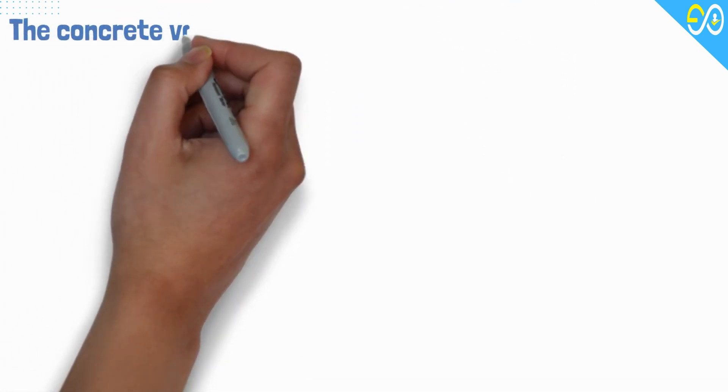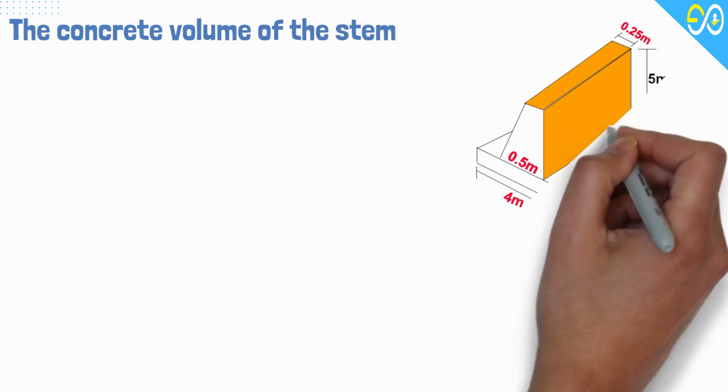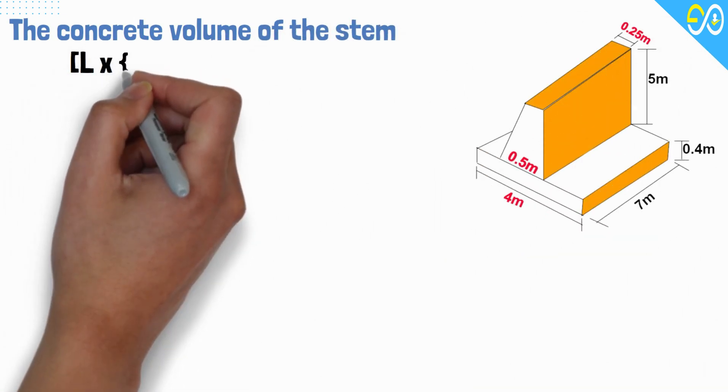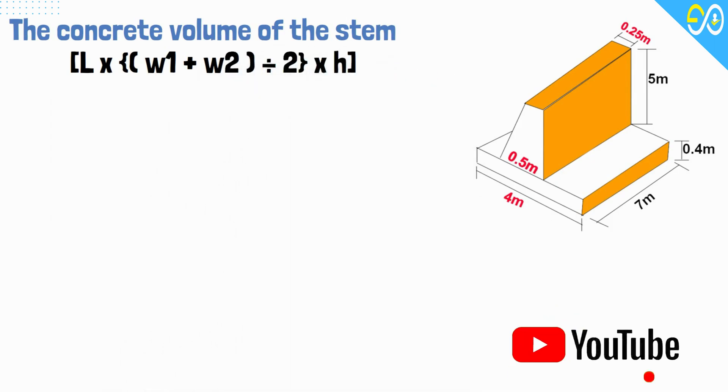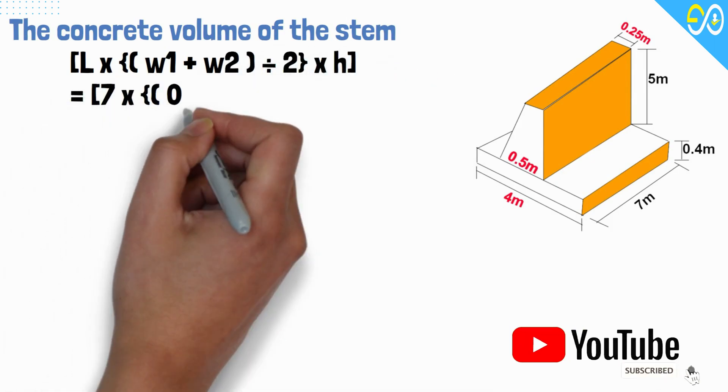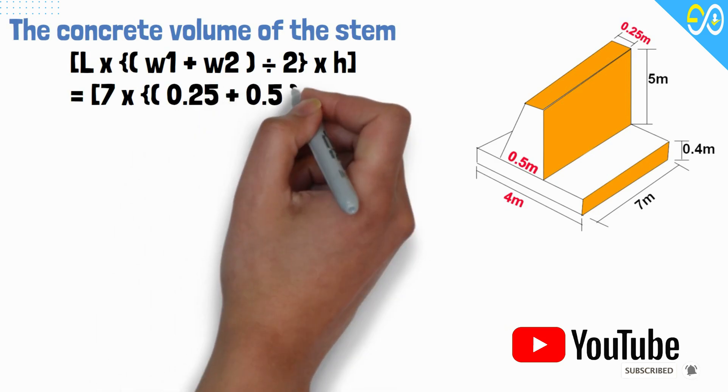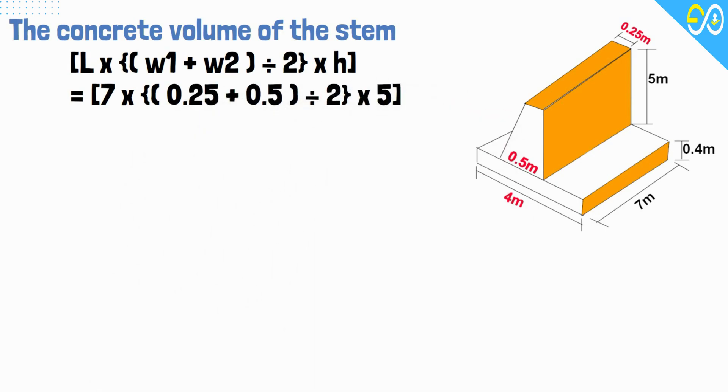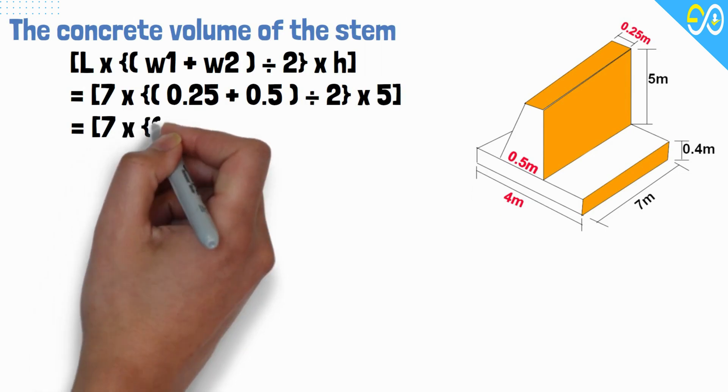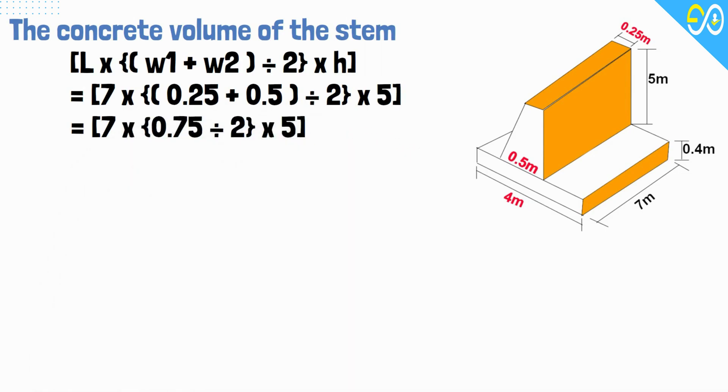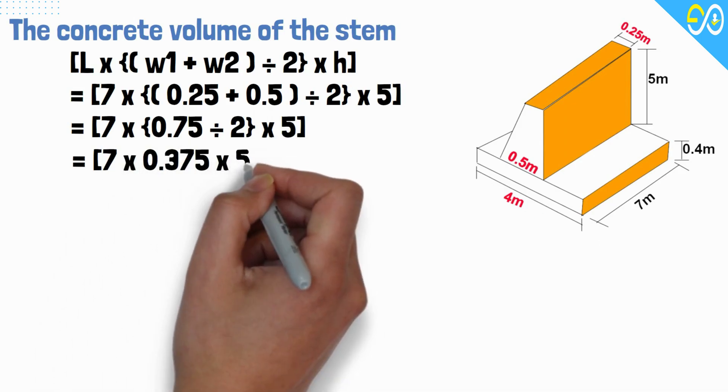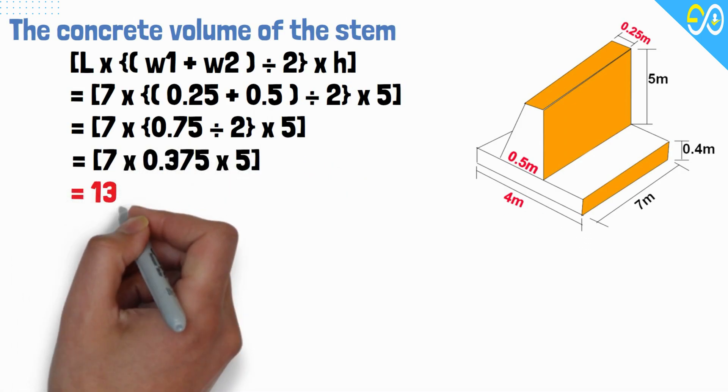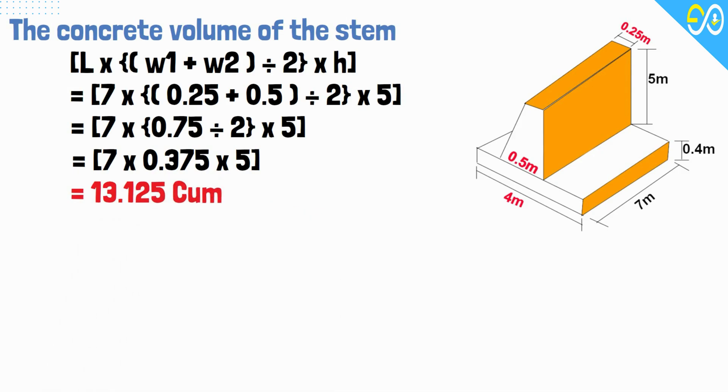The concrete volume of the stem equals L times (W1 plus W2) divided by 2 times H, equals 7 times (0.25 plus 0.5) divided by 2 times 5, equals 7 times 0.75 divided by 2 times 5, equals 7 times 0.375 times 5, equals 13.125 cubic meters.